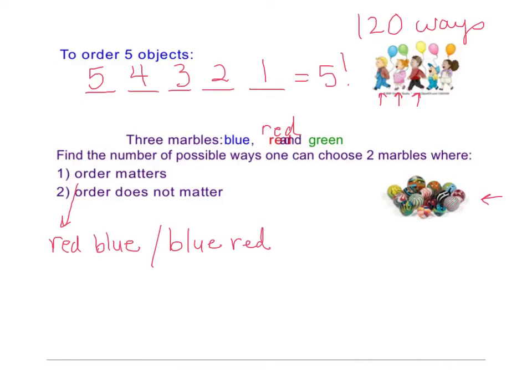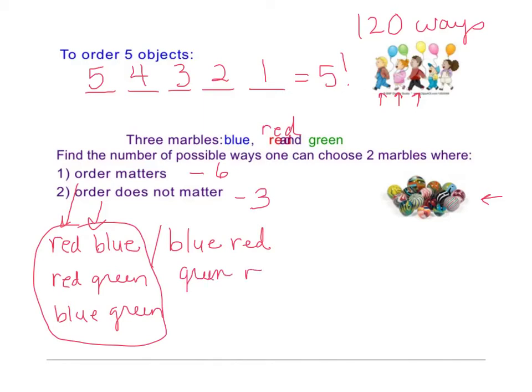So order matters, you'll have six. And order does not matter, you'll just have three. So you'll have red, blue, red, green, and blue, green. That's when order does not matter, if you just have this column right here. That's three possibilities. Then if it does, then you just reverse the colors. So you say green, red and green, blue are all different. And that's how you get the six.